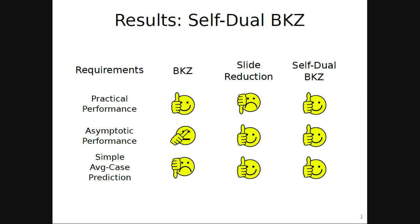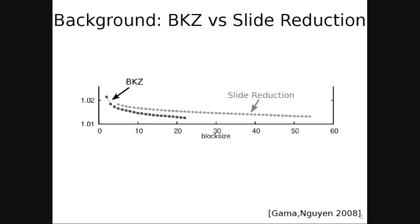Why do I say that slide reduction behaves so badly? It's only based on one experimental study that has been done so far that included slide reduction, by Gama and Nguyen in 2008 who actually also designed slide reduction. On the x-axis you see the block size parameter of the reduction algorithm which is a measure of the time spent on it, the run time. Here you see a normalized measure of the shortest vector found by the algorithm, so the lower the better. As you can see, BKZ clearly outperforms slide reduction in their experiment. That is why no one has used slide reduction since then anymore and it was more considered as a theoretical algorithm.